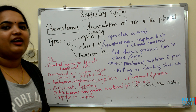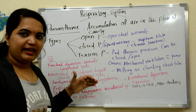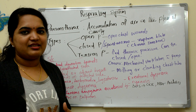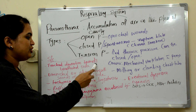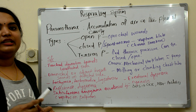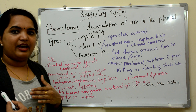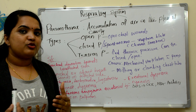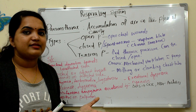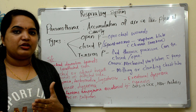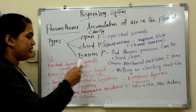Now we will move through the signs and symptoms — the most important part of pneumothorax. All prometric exams will be asking about signs and symptoms. The first sign is tracheal deviation towards the unaffected side. For example, if a patient has tension pneumothorax on the right side, the tracheal deviation will be towards the left — the opposite, unaffected side.